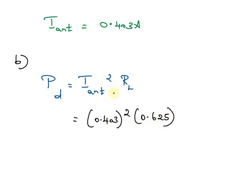After simplification, we get power dissipated PD equals 0.102 Watt. Here, part C.